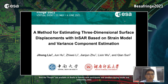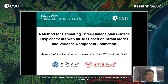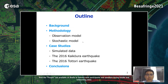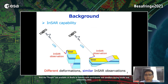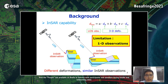My name is Ji-Hong, from Central South University, Changsha, China. Today my presentation is about a method for estimating three-dimensional surface displacement with InSAR based on strain model and variance component estimation. Quite different ground surface deformations may result in possibly similar InSAR observations, because InSAR measures the projection of real three-dimensional deformations—we cannot obtain three unknowns from one equation. This is one of InSAR's key limitations.